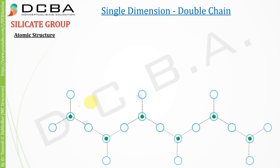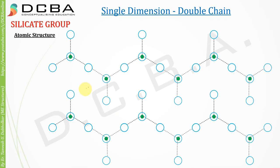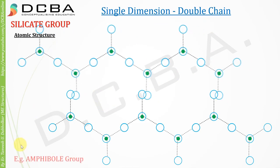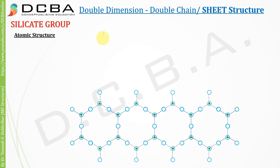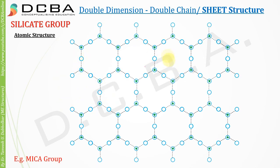Next we take two single dimension single chains and join them together — what we get is a single dimension double chain, and the example for this is the amphibole group. For the third structure, we take two single dimension double chains and join them — we get something called a double dimension double chain, also called a sheet structure, and the example for this is the mica group.